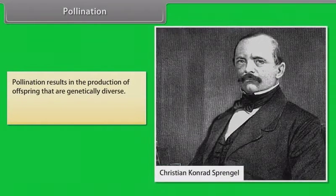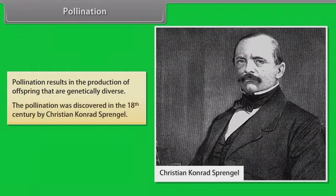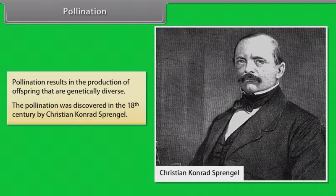Pollination results in the production of offspring that are genetically diverse. Pollination was discovered in the 18th century by Christian Conrad Sprengel.